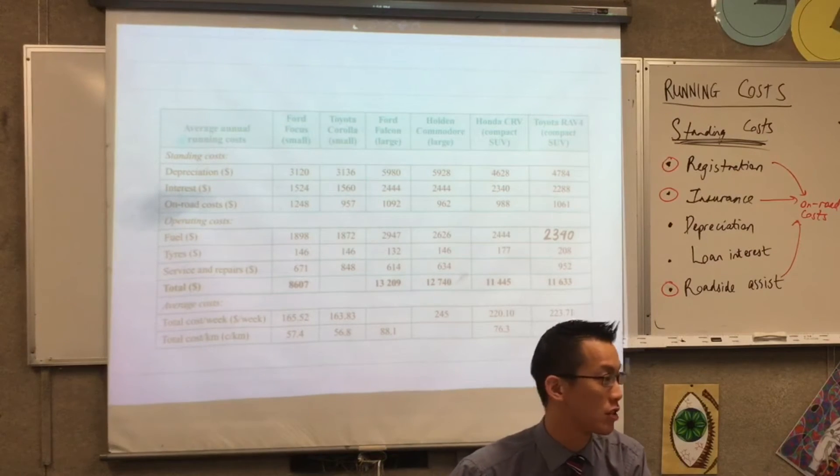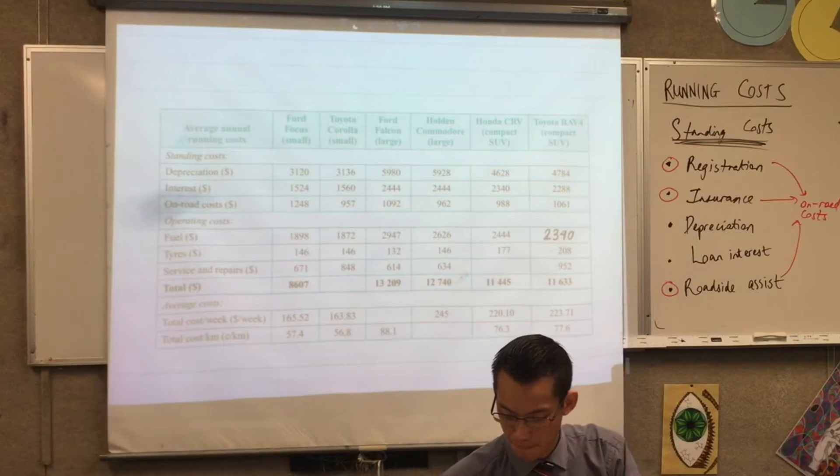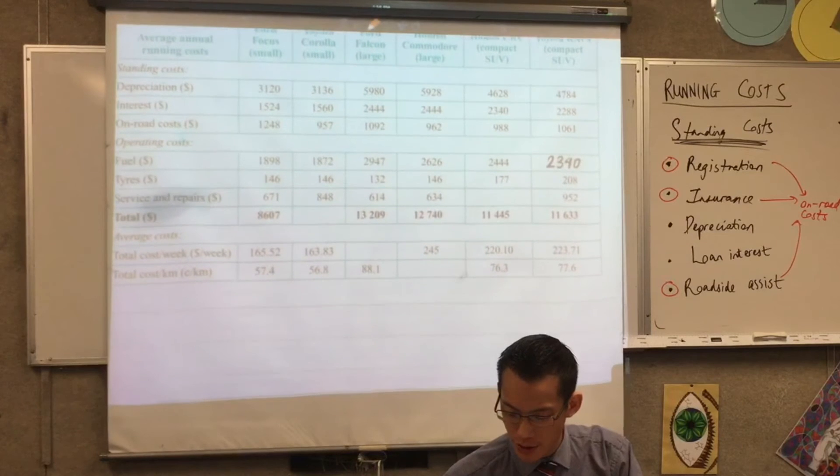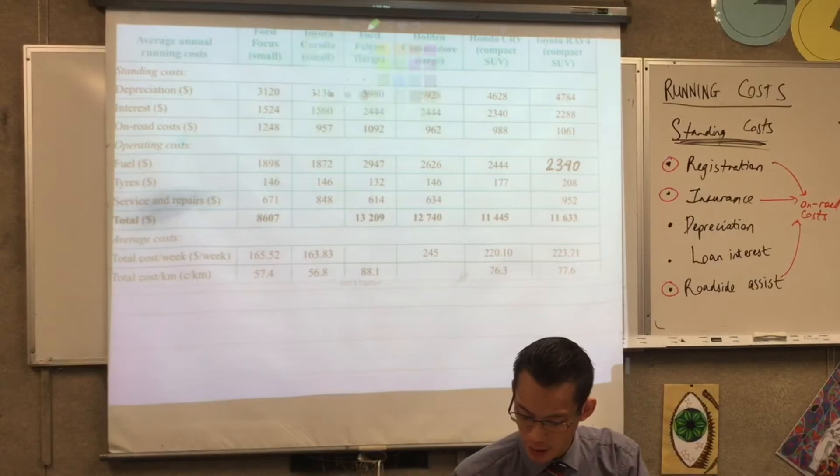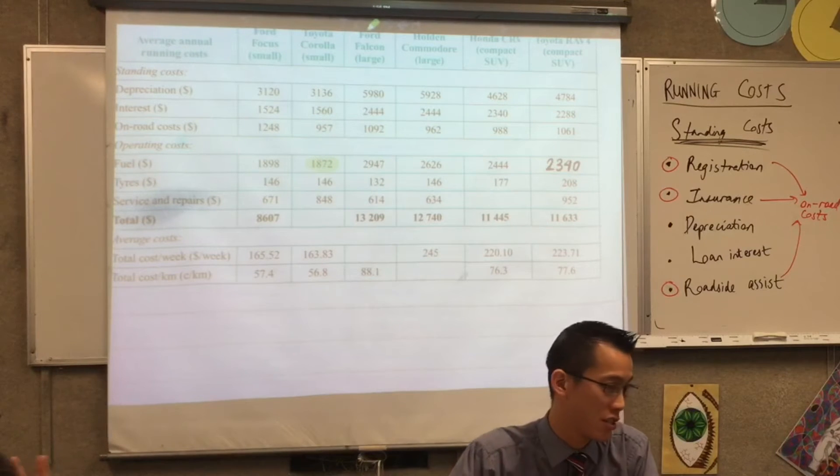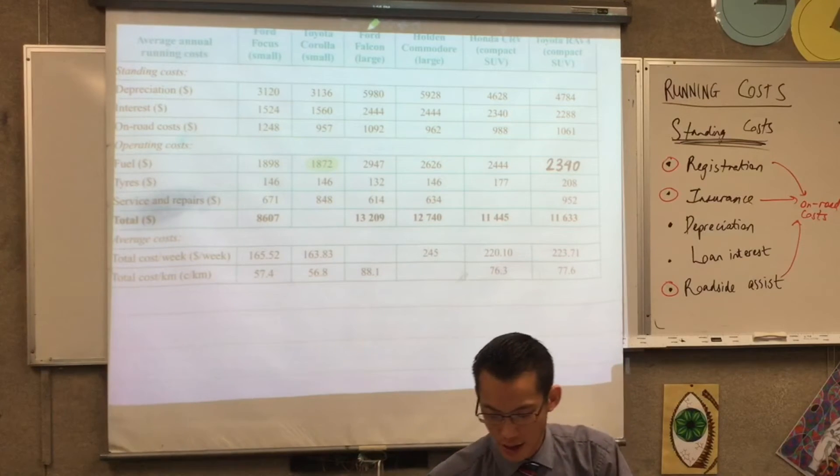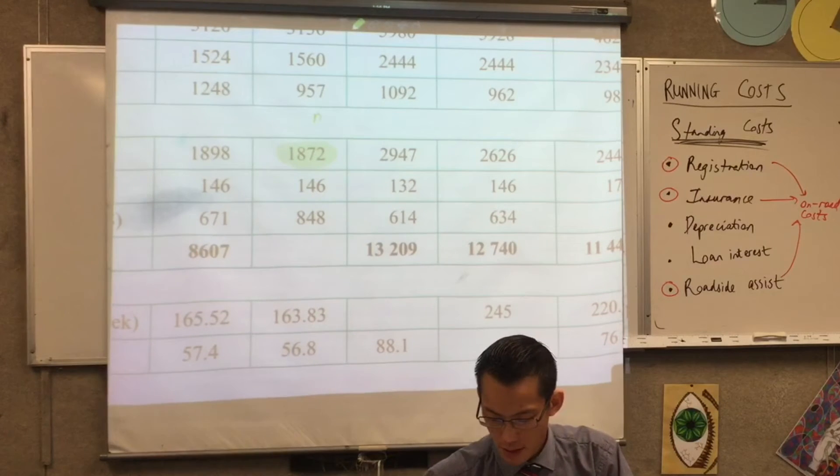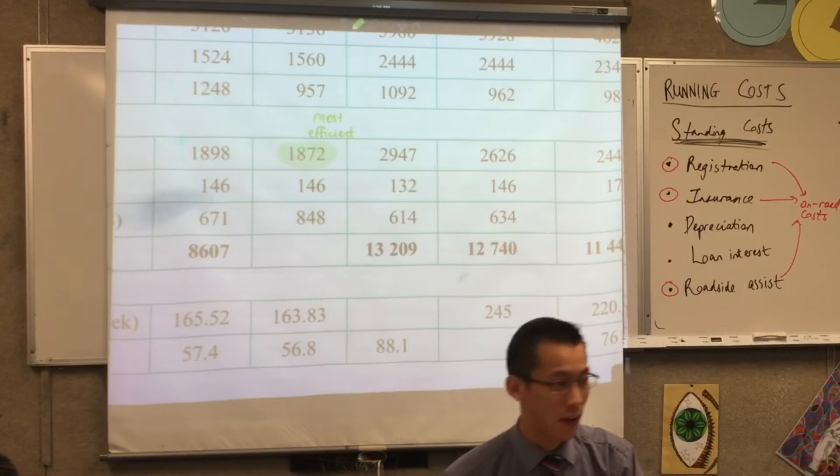Good. So now that we have all those prices there, which one is the best? Which is the most efficient car? The Corolla. Yeah, it's the one that's spending the least. Let's put it in green because that's a good thing. Hooray for the Corolla. It's a small car, that's why it's more efficient - it just has to lug less weight around.